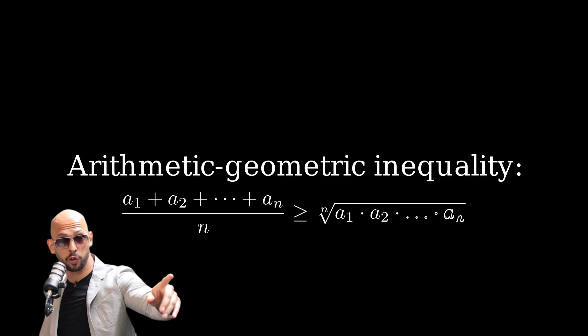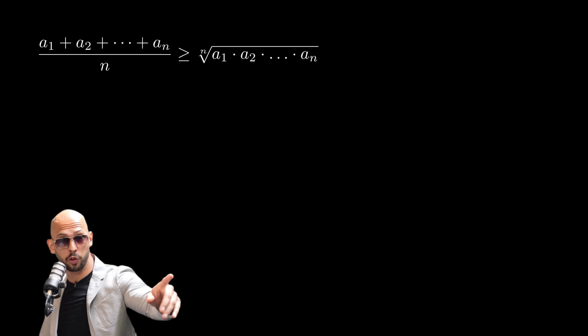We need precision to prove this problem. In our case, we only have three numbers, so let's apply the arithmetic geometric inequality to three numbers. A1 plus A2 plus A3 over three is greater than or equal to the cube root of A1 times A2 times A3.